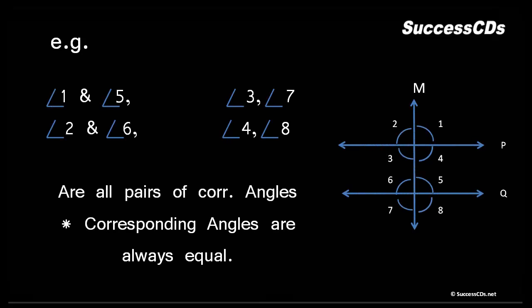Angle 1 and angle 5 are at the right topmost corner for lines P and Q — corresponding angles. Angle 2 and angle 6 are at the left topmost corners. Angles 3 and 7 share the left bottommost corner, and angles 4 and 8 share the right bottommost corner for their respective lines. All these pairs are corresponding angles, and corresponding angles are always equal: angle 1 = angle 5, angle 2 = angle 6, angle 3 = angle 7, and angle 4 = angle 8.